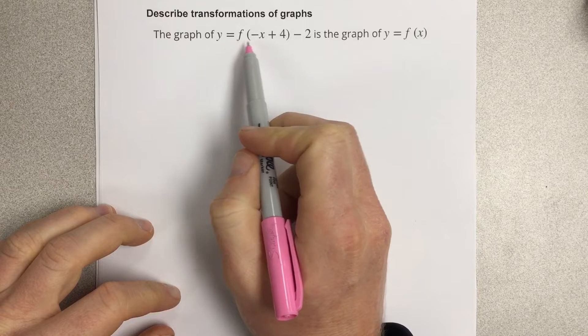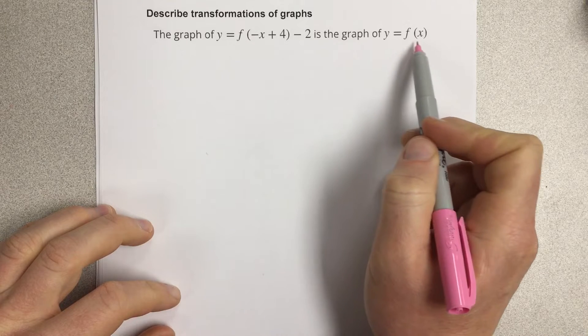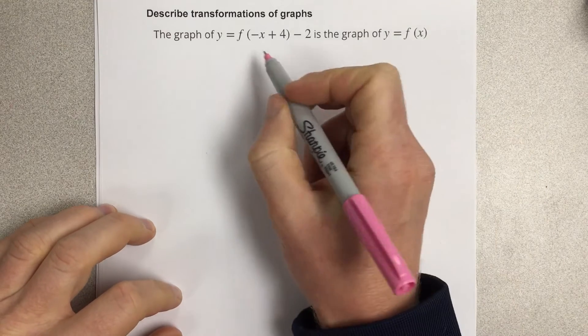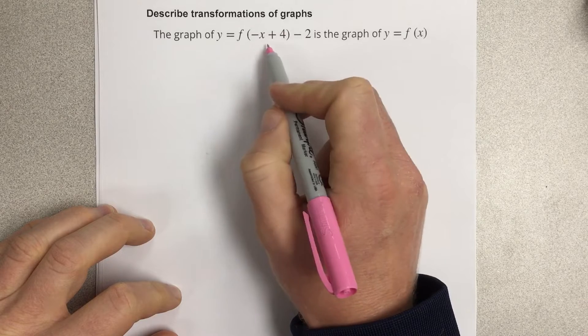The graph of y equals f of negative x plus 4 minus 2 is the graph of y equals f of x. They want us to describe the transformations occurring for this function.